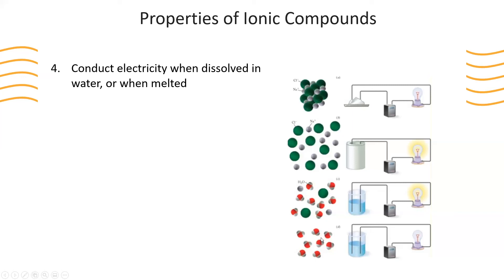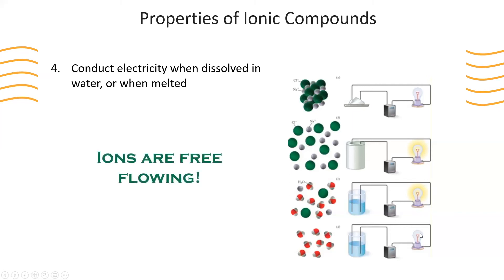But in the fourth picture, where we do not have an ionic compound — meaning no negative and positive charges flowing freely — the light bulb is not lit. So the property that allows ionic compounds to conduct electricity is when the ions are freely flowing, which occurs in the melted state or when dissolved in water.